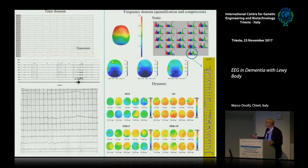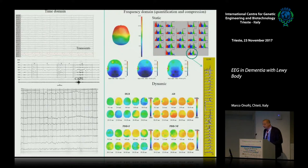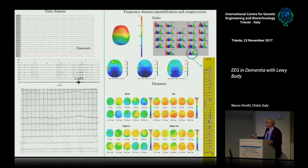EEG can be represented under two domains. One domain is the time domain. In the time domain, you evaluate through time what is changing. With this kind of evaluation, which is the classical interpretation for epilepsy, you evaluate transience in time.